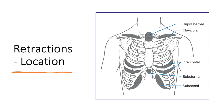Here are some examples of locations of retractions that you can commonly see in pediatrics. In upper respiratory problems such as croup, you may see retractions in the upper regions such as suprasternal or clavicular. In bronchiolitis or pneumonia, you may see retractions in the lower areas such as intercostal, substernal, or subcostal. In severe respiratory distress, you might see all of these.